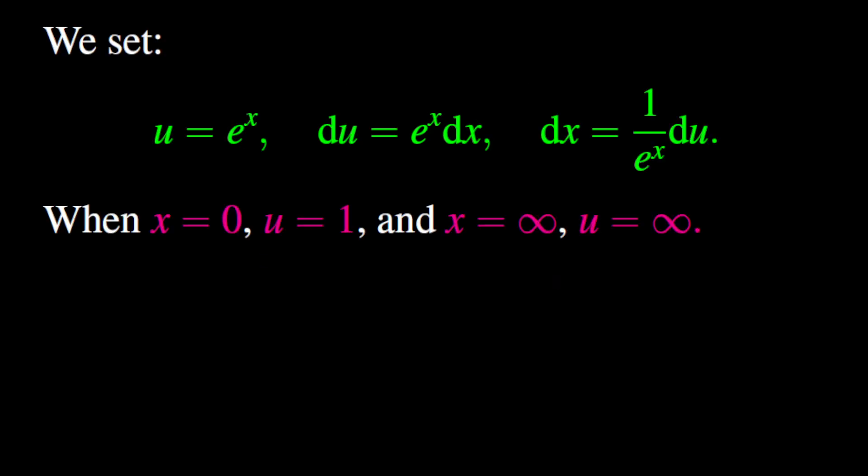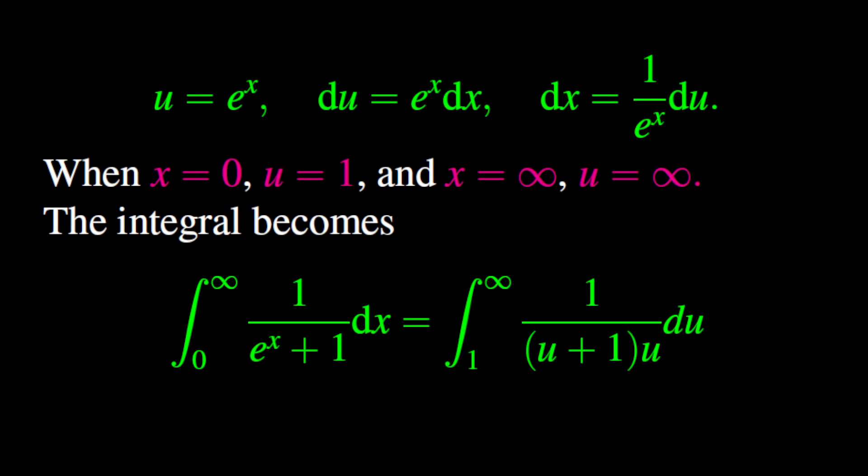Now let us set the new endpoints of our integral. When x is equal to 0, u is equal to 1, and when x is equal to infinity, u is equal to infinity. Therefore, the integral from 0 to infinity becomes the integral from 1 to infinity of 1 over u times u plus 1 du.